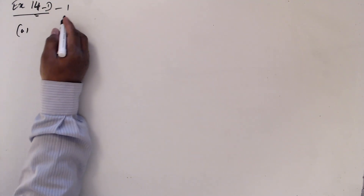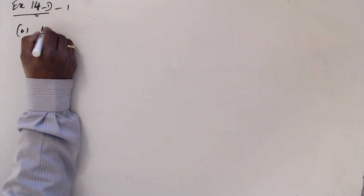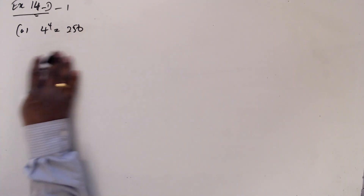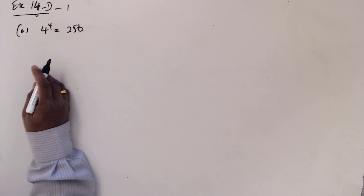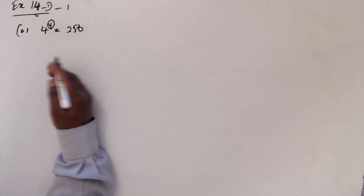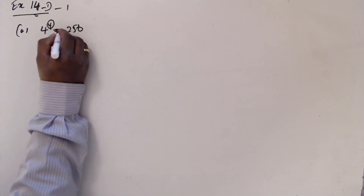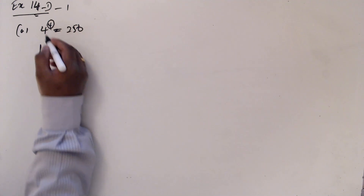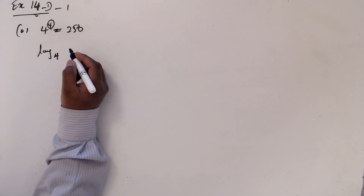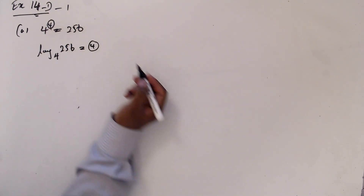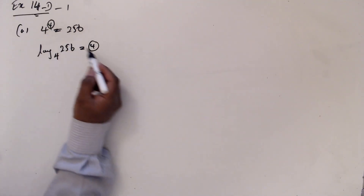Question number a: 4 to the power 4 equals 256. We need to use logarithms — apply logarithms here. When we apply logarithms, we are separating the power. Now I am going to write log base 4 of 256. You can write it as 4; I circle this one — this 4 is going to be here.